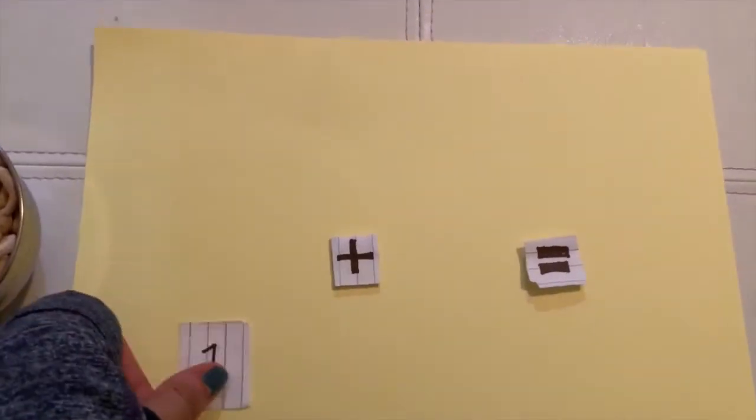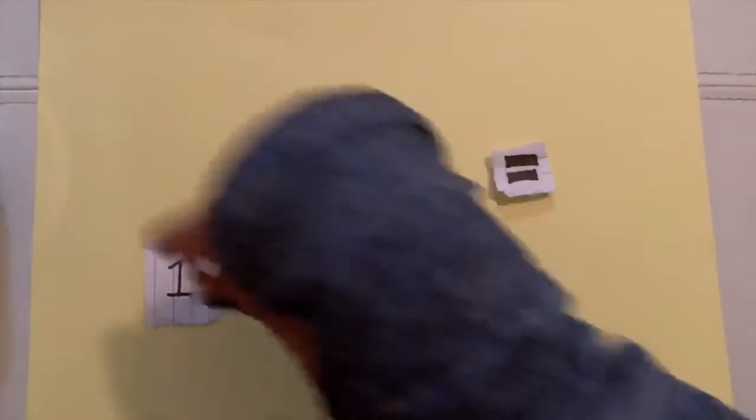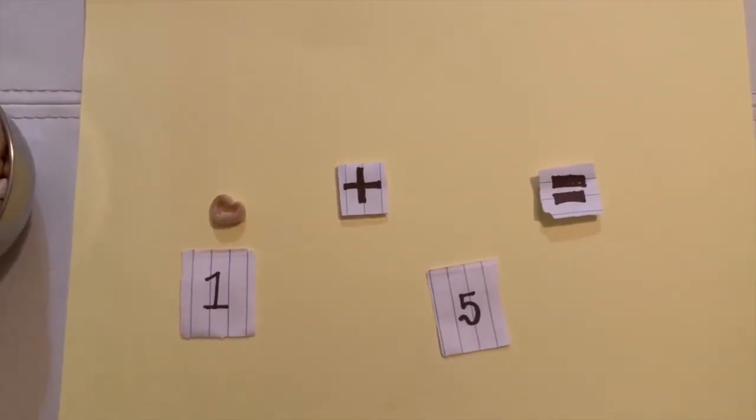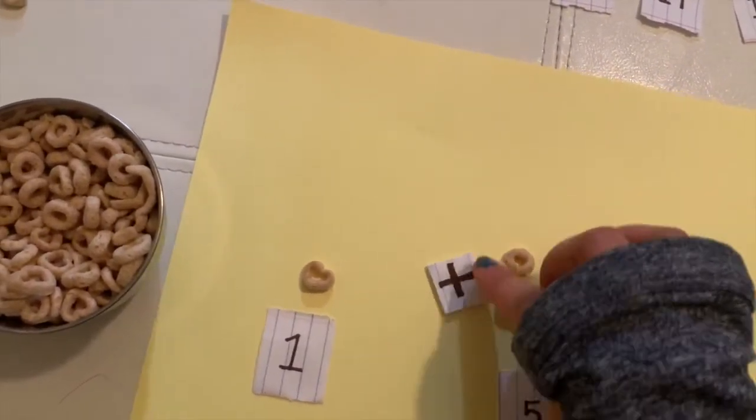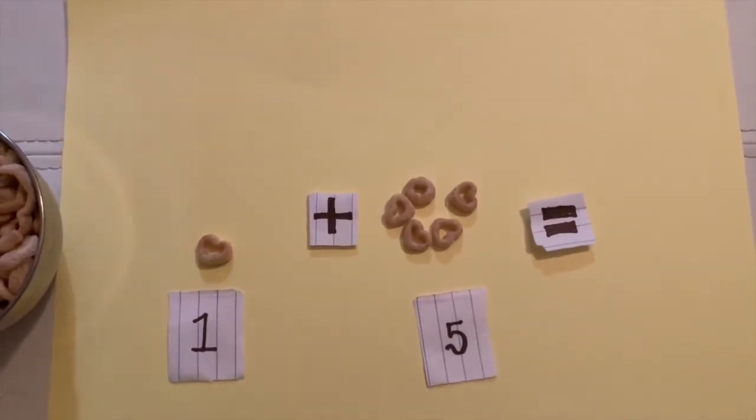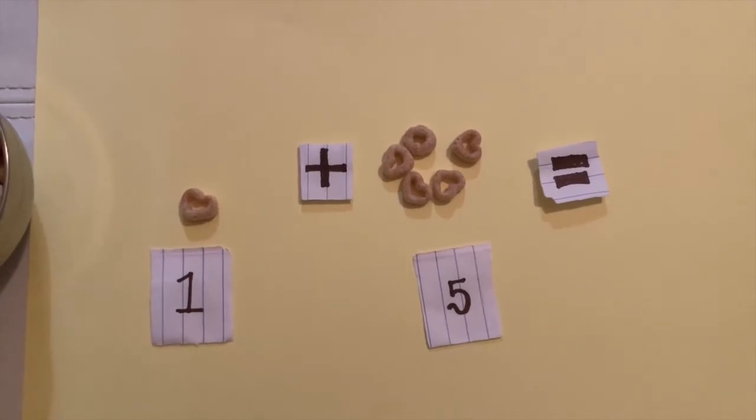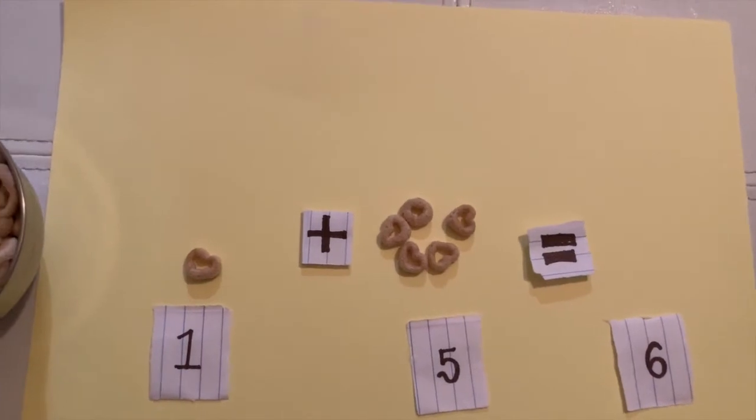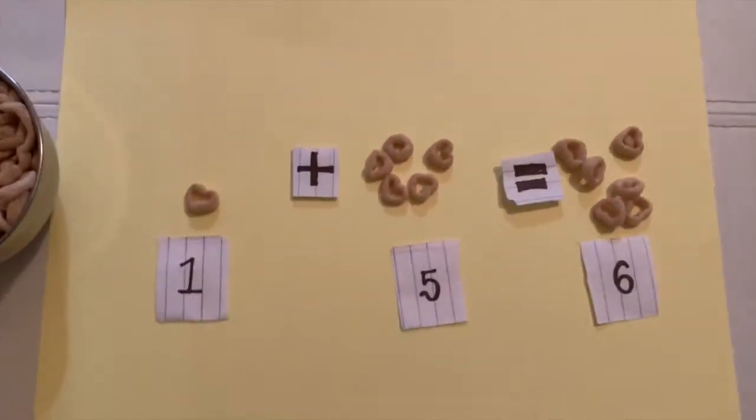Okay, so I'm going to put one Cheerio first. One. Now I'm going to put five Cheerios. Okay, so now we have one plus five equals—let's take a minute. One plus five equals six. Six Cheerios. Isn't that so simple?